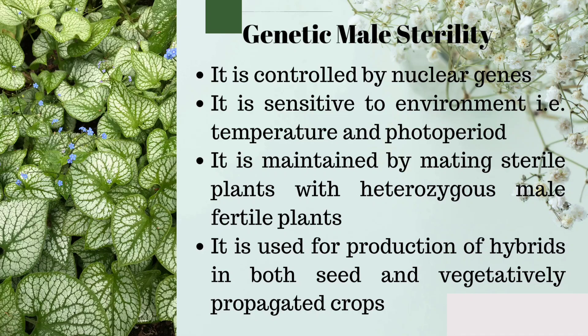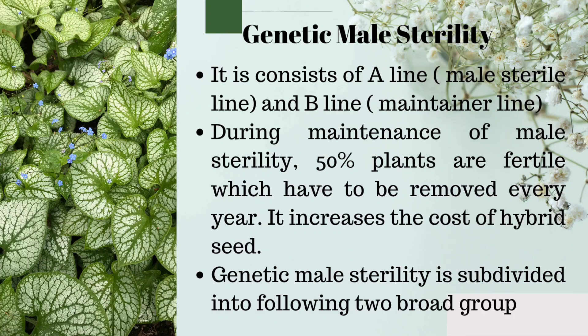Genetic male sterility is controlled by nuclear genes. It is sensitive to environment, that is temperature and photoperiod. It is maintained by mating sterile plants with heterozygous male fertile plants. It is used for production of hybrids in both seed-propagated and vegetatively propagated crops. It consists of an A line (male sterile line) and a B line (maintainer line).